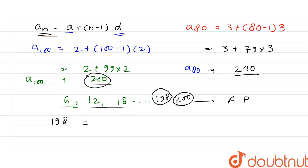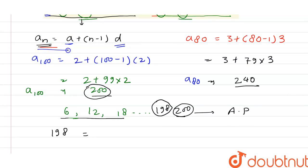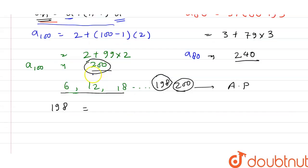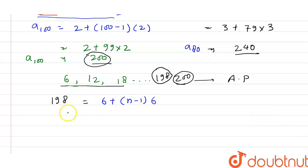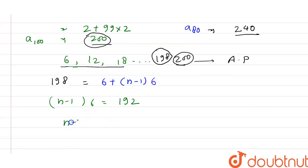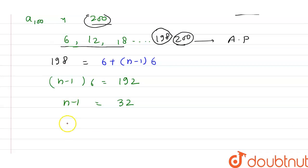Now we apply the formula again to find n. The first term is 6, the common difference is 12 minus 6 = 6, and the last term is 198. So: 198 = 6 + (n−1)×6, which gives n−1 = 192÷6 = 32, therefore n = 33.